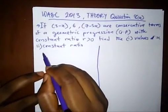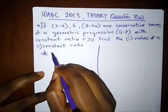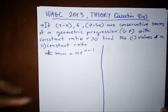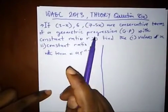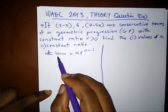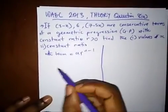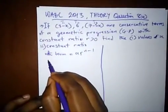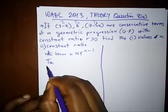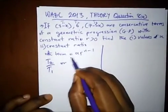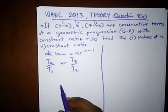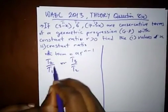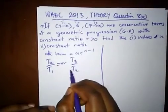Remembering that the nth term in a GP is AR^(n-1). To get the value of x, we recall that the common ratio is either t2 divided by t1, or t3 divided by t2. So to get our value of x, we equate these: t2 over t1 equals t3 over t2.